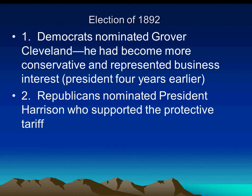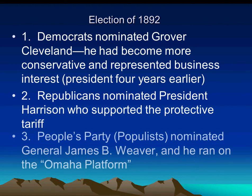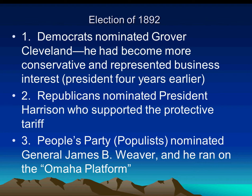Cleveland was a Democrat. He didn't get to serve two consecutive terms — they were separated. One of the big issues in the election of 1892 was the protective tariff, which had also been an issue in 1888. In the meantime, the Populist Party nominated General James B. Weaver, and he will run on the Omaha platform.